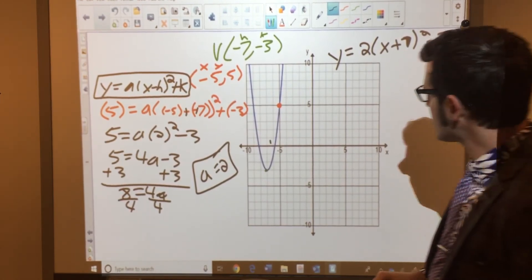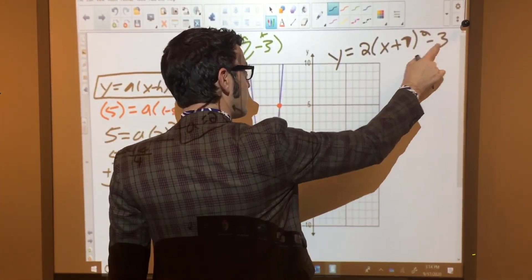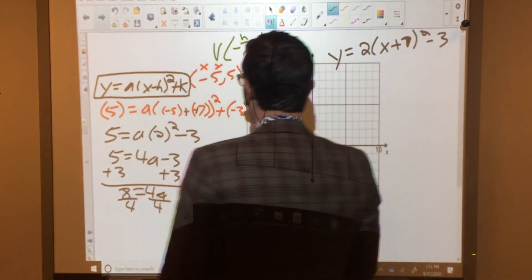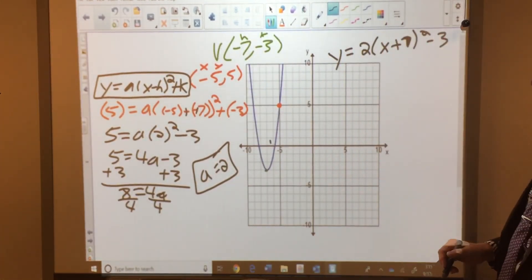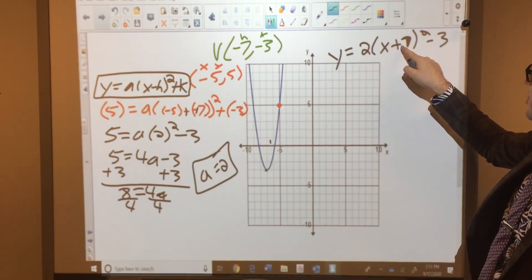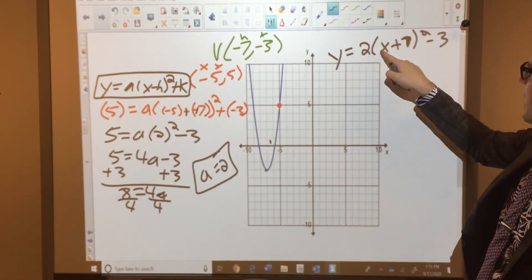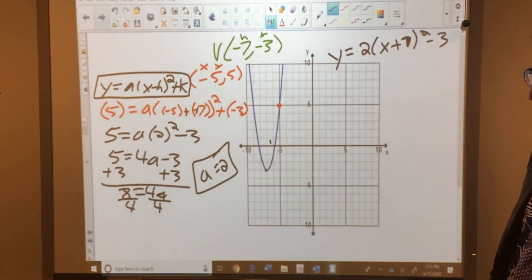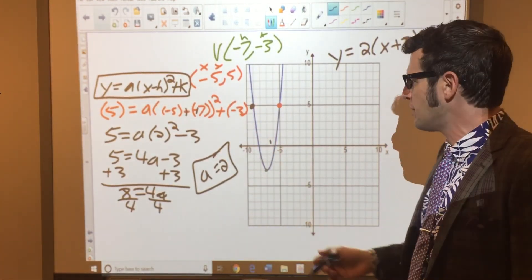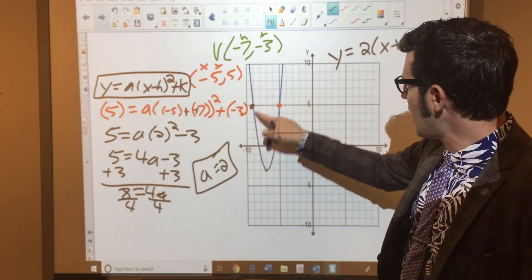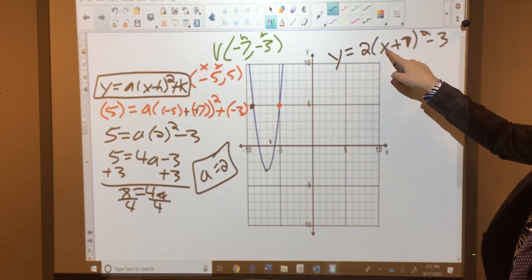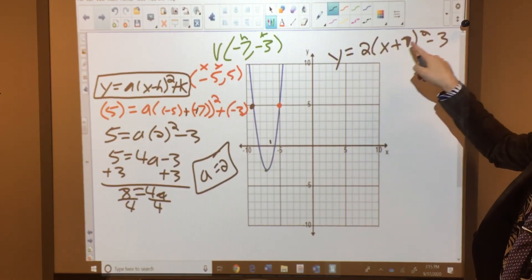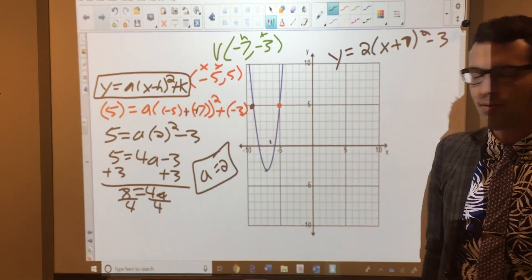Let's check to see if that works. Our vertex should be negative 7, negative 3. Yep, that's that point. And if we plugged in negative 5, would we get 5 out? Well, negative 5 plus 7 is 2. 2 squared is 4. 4 times 2 is 8. 8 minus 3 is 5. That works out. We could check this other coordinate just to make sure we're right. We've got the graph. Why not? Might as well do it. That's negative 9, 5. If I plug in negative 9, negative 9 plus 7 is negative 2. Negative 2 squared is 4. 4 times 2 is 8 minus 3 gives us that 5.